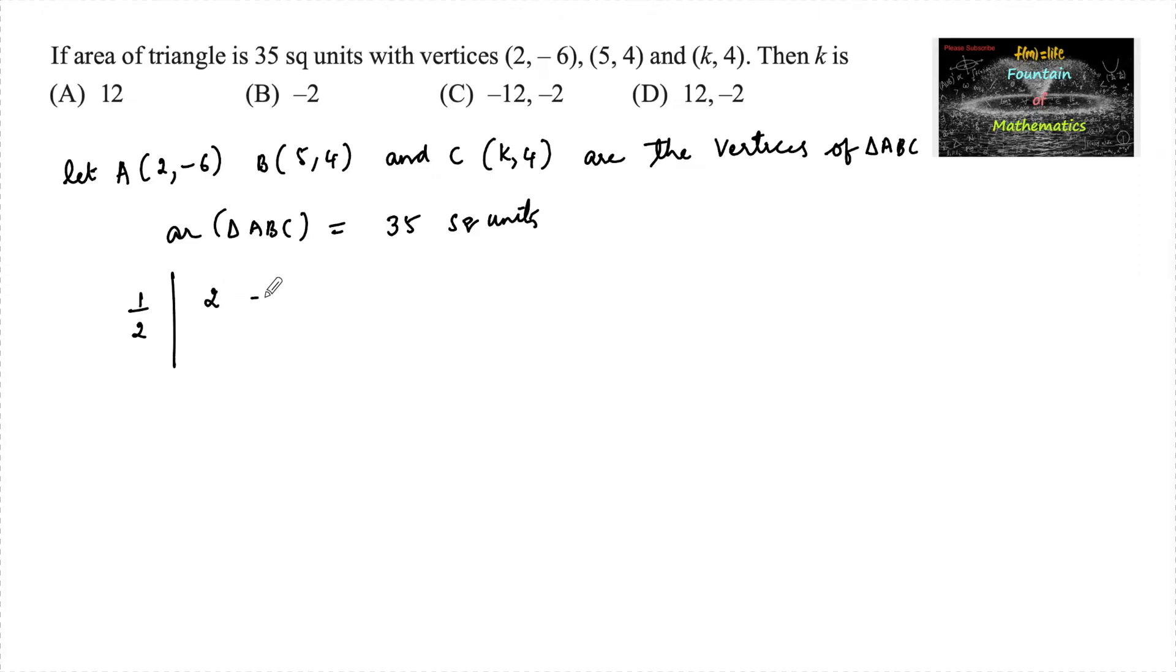That is 5, 4, and 1, x3 y3 and 1, that is k, 4, and 1 equals 35. So one-half times the modulus of this determinant.